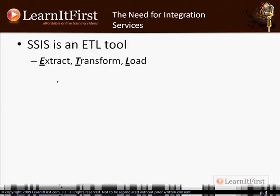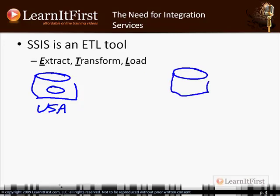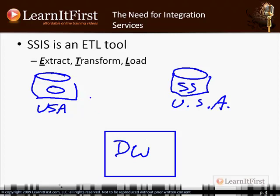A lot of times SSIS is all about data. You'll be drawing little diagrams on paper, during a meeting, or on a whiteboard — something like: here's the Oracle database with 'USA,' here's SQL Server, and here's the data warehouse (DW). We need to extract from Oracle and SQL Server, transform to 'United States,' and then load into the data warehouse. This is what SSIS is made for — it's an ETL tool. It hooks up to all kinds of different data sources and can load into all kinds of different destinations.